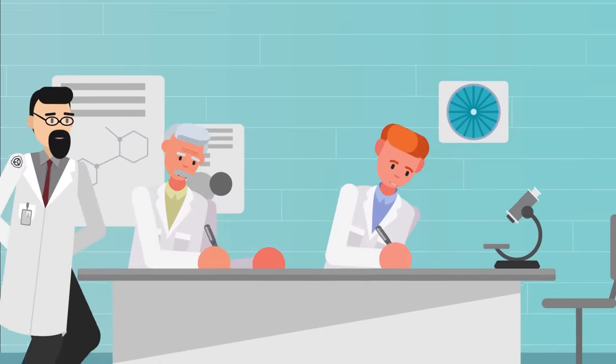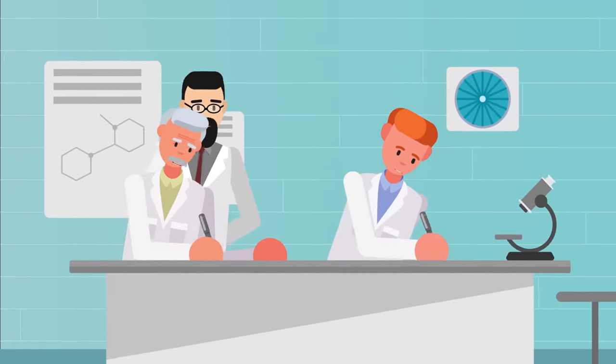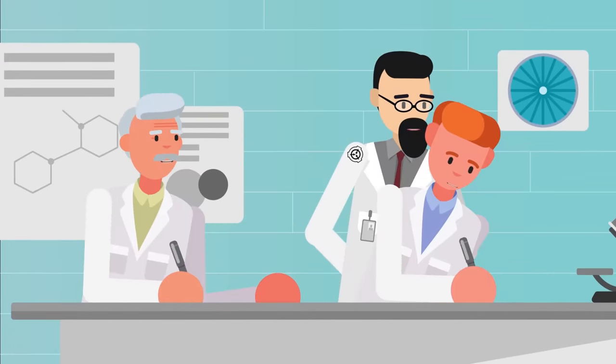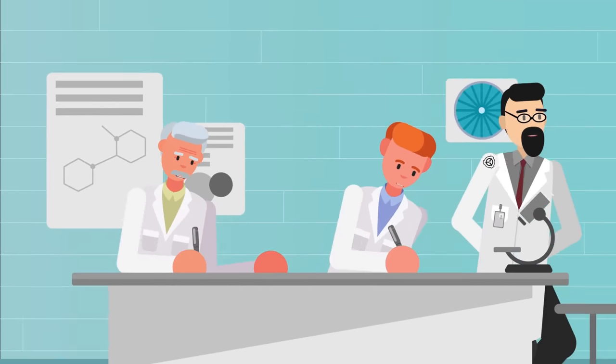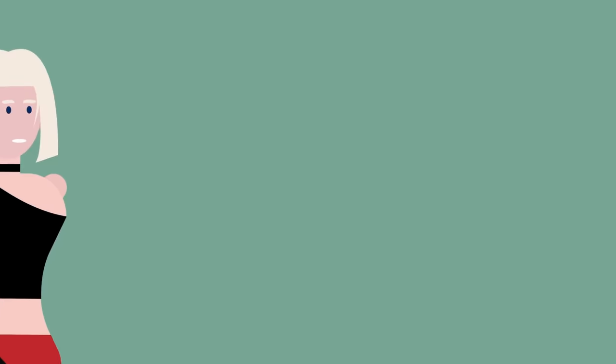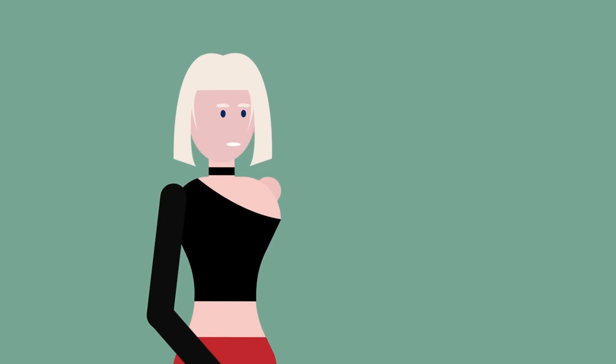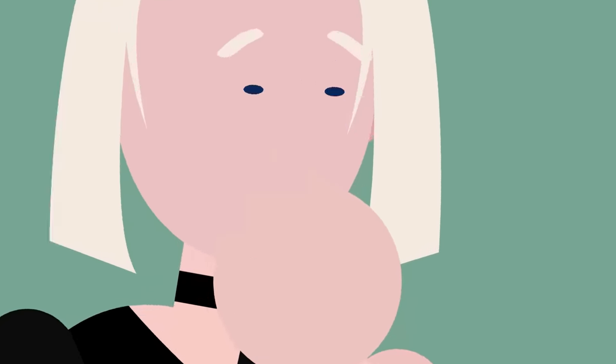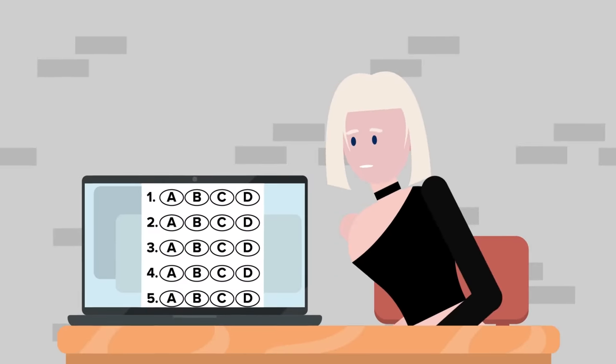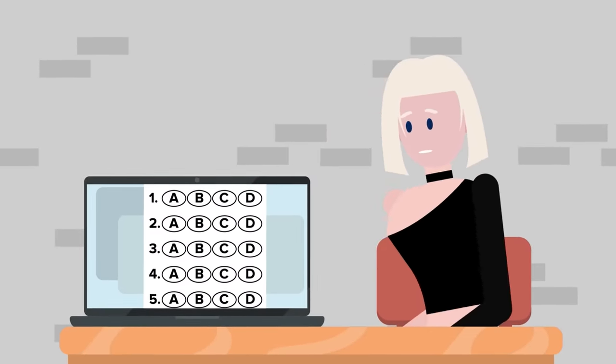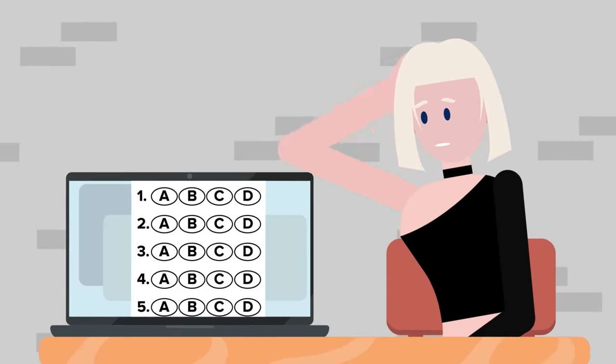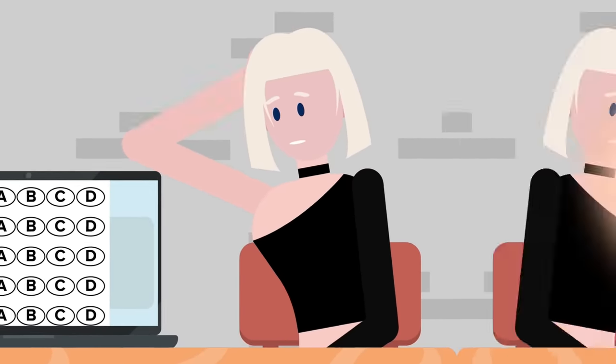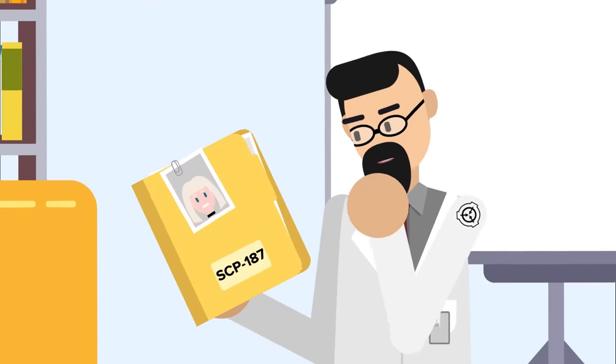The scientists assigned to her case studied the results and created other tests, until they understood how her precognitive ability works. She can see the future of anything that's physically affected, so when an answer is marked down on a piece of paper, that's a notable change. But when an entry is typed into a computer, the computer remains the same. So her ability wasn't able to help her on the computerized tests.